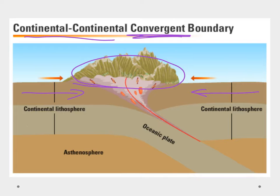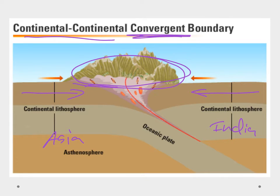The best example of this is the Asia plate and the India plate. We're seeing this occur currently, forming the Himalayan mountains, including Mount Everest. India is still moving, so Mount Everest is still growing. We don't have volcanic activity, but we still have mountain building activity on a convergent boundary.